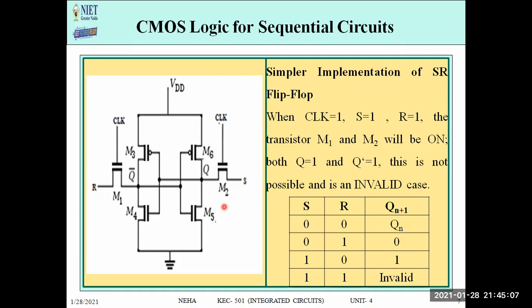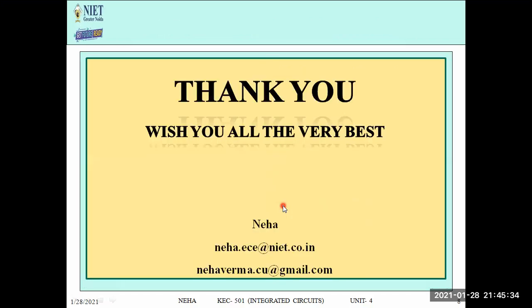If this comes in the exam — to design a simpler implementation of the SR flip-flop — you have to draw this circuit and explain each case: when clock is 0, when clock is 1 with inputs 0,0 / 0,1 / 1,0 / 1,1, and how the output is produced. This is all about the simpler implementation of the SR flip-flop. If you have any query, please post your question in the comment box. Thank you.